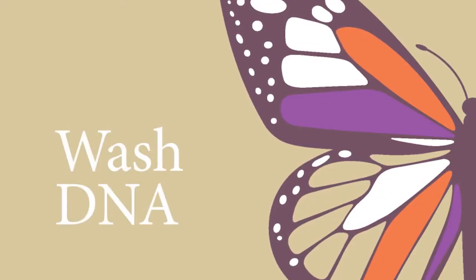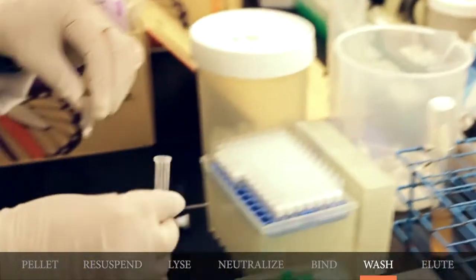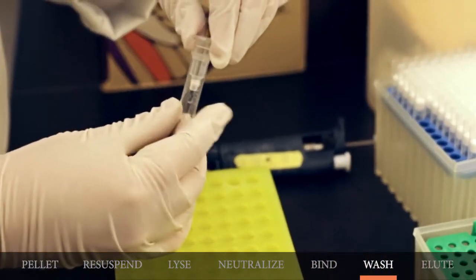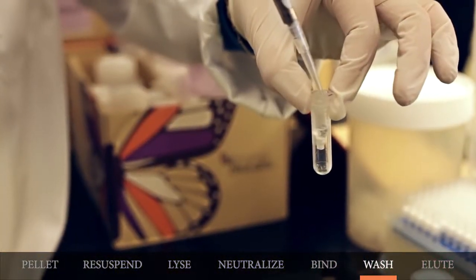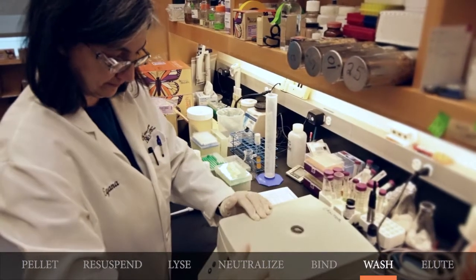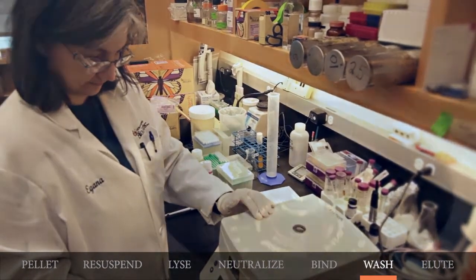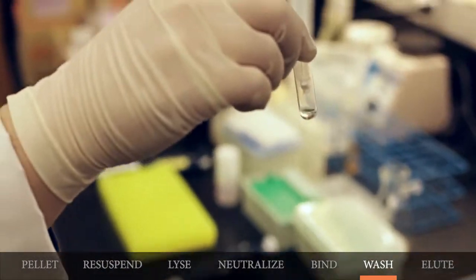Now the washing begins. Reinsert the column into the collection tube and add 200 microliters of the Plasmid Wash Buffer 1. Centrifuge for one minute. You may discard the flow-through at this point, but this step is optional.